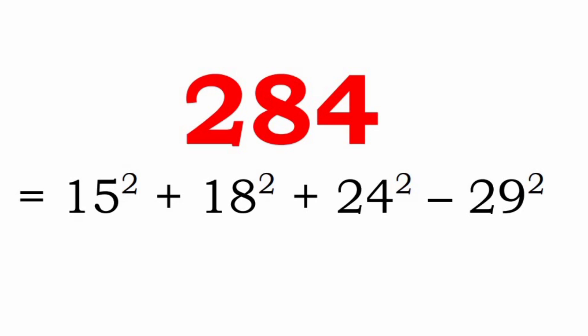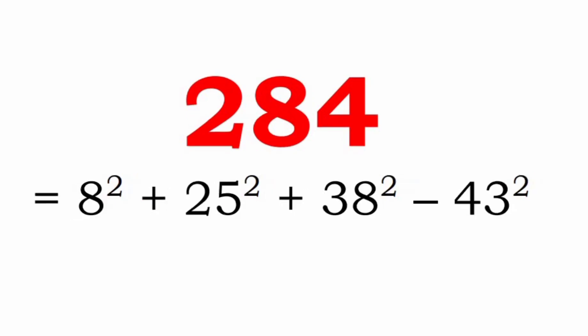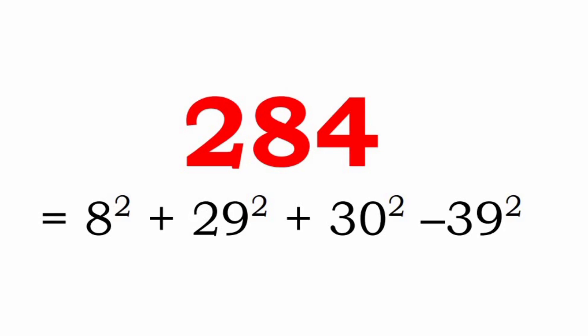Another representation is 17² plus 18² plus 20² minus 27², where the digits used are 0, 1, 2, 7, and 8. We can also write 284 as 8² plus 25² plus 28² minus 43², using digits 2, 3, 4, 5, and 8. And 8² plus 29² plus 30² minus 39², using digits 0, 2, 3, 8, and 9.